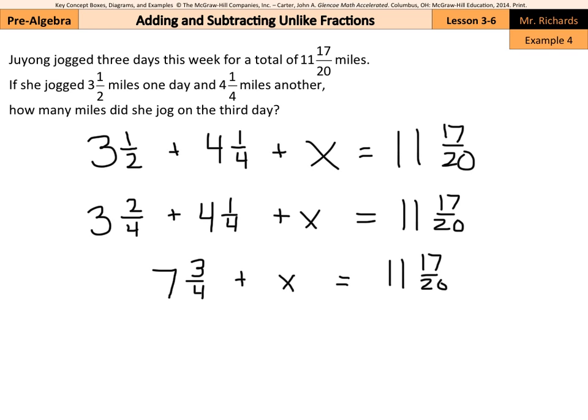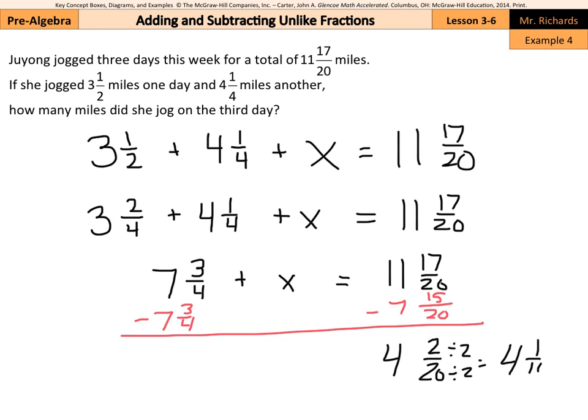Well, I need to subtract seven and three-fourths from both sides to find my x. But my common denominator here for four and twenty is actually twenty. Well, four times five got me twenty, three times five is going to get me fifteen. And now I can subtract, seventeen minus fifteen is two over twenty, eleven minus seven is four. If I divide by two on top and bottom, I get four and one-tenth miles for that third and final day.